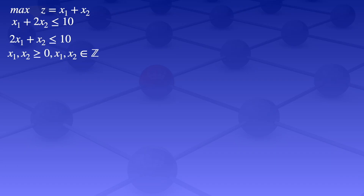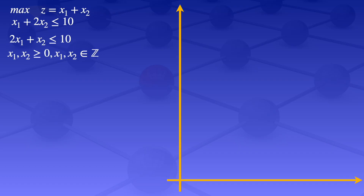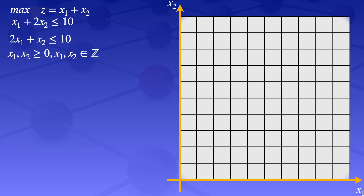I'll use a graphical method, so I'll start by drawing my horizontal axis, then draw the vertical axis, and then label the x1 and x2. I'll draw a grid and put the numbers on the grid — integers 0, 1, up to 10.